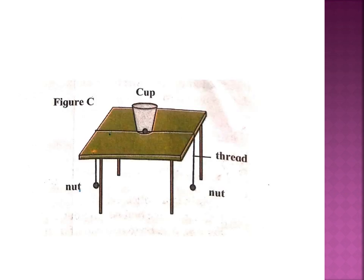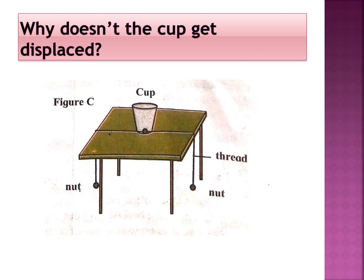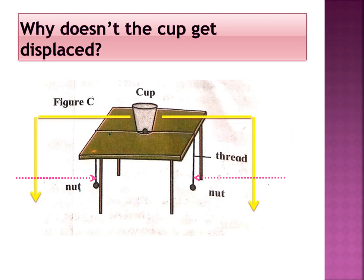In Figure C, the cup is placed at the center of the table with two nuts hanging on opposite sides. The forces applied by both nuts are equal and opposite, so the cup does not move. Also, the force and displacement are perpendicular to each other. When force and displacement are perpendicular, or when the force does not cause any displacement, the work done is called zero work done.